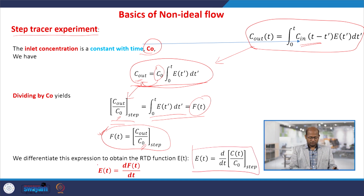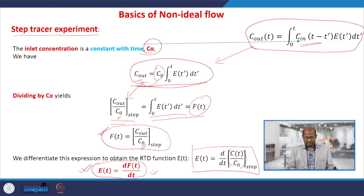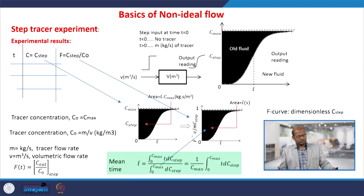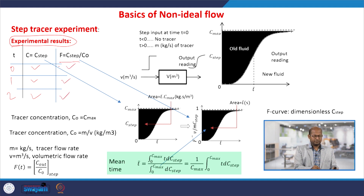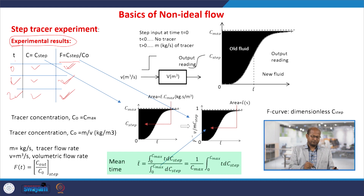How F(t) and E(t) are related: E(t) = dF(t)/dt. We can write it either way. So if we know F(t), we can find E(t) by differentiating dF(t)/dt. From the experimental results of the step tracer experiments, we have time and step output concentrations, and from that we find F(t) at particular times. Once we have the F(t) versus t table, we can develop F(t) curves and plot them.